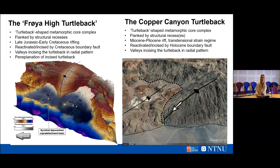That scale difference is also the argument we're using — that deeper levels of the crust are actually part of this exhumation in the necking domain, and that we can use this to create the turtle back structure. Whereas when the turtle backs are smaller in size, as at Copper Canyon, this would point more towards folding, indicating a transtensional strain regime, which is quite similar to what we see on the Norwegian mainland in the Devonian system there.